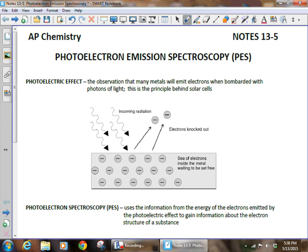Now PES data is based on the photoelectric effect. The photoelectric effect is when you shine higher energy light, those photons, at a metal or some substance, and those photons are capable of bumping out the electrons, that sea of electrons that are in that metal, as it says here, waiting to be set free.